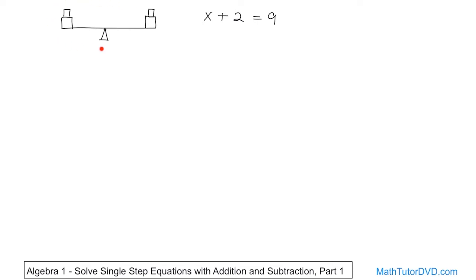So why did I spend time drawing the seesaw? It's because this equation has an equal sign, and that equal sign is kind of like the balance point. Everything on the left of this equation is equivalent to — or balanced with — everything on the right side. So just like the seesaw, you can add or subtract anything you want to the left side as long as you also do it to the right-hand side.